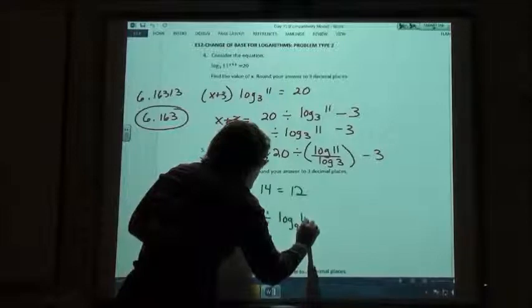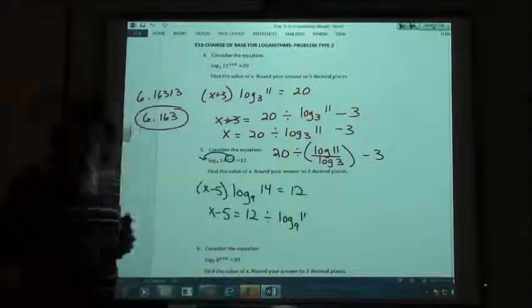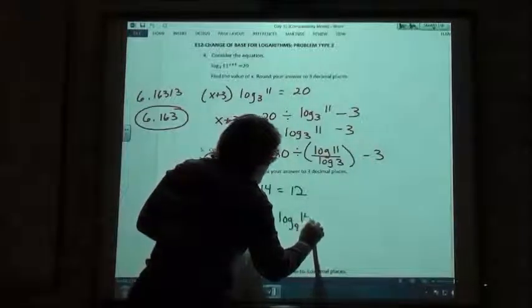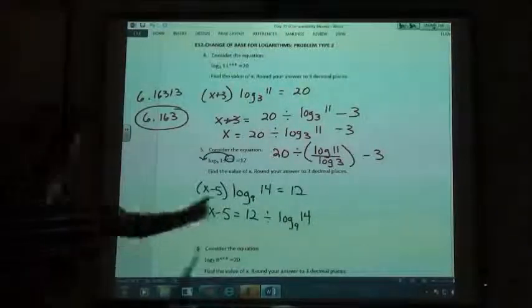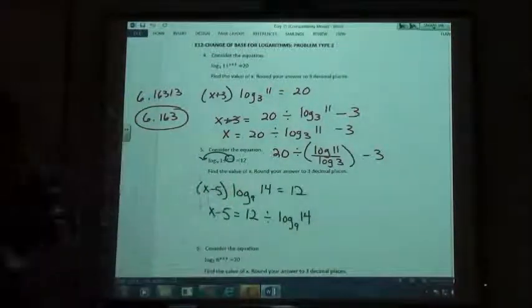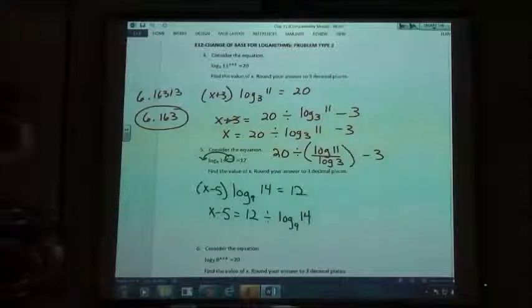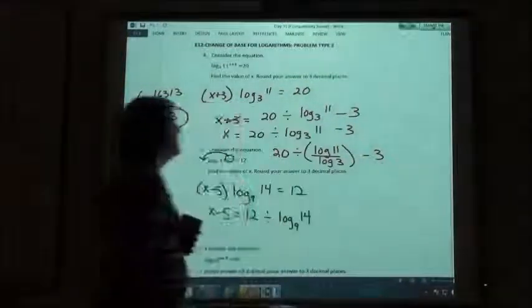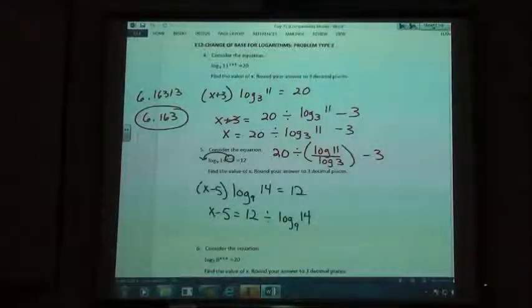Oh, log 9 minus. Log 9 of? Negative 5? No. 14. 14, right? Log 9 of 14. That all goes together. That's one expression, right? 9 of 14. 14. And then I'm going to minus anything, no? We're not going to minus anything, but we are going to do something.